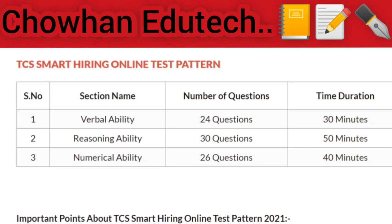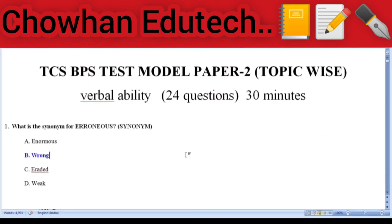Here is the TCS Smart Hiring online test pattern. In this we have 80 questions and we get 2 hours to finish it. There are three sections: first section is Verbal Ability — 24 questions, 30 minutes; second section is Reasoning Ability — 30 questions, 50 minutes; and third section is Numerical Ability — 26 questions, 40 minutes. Let's begin with the model paper — TCS BPS test model paper 2.